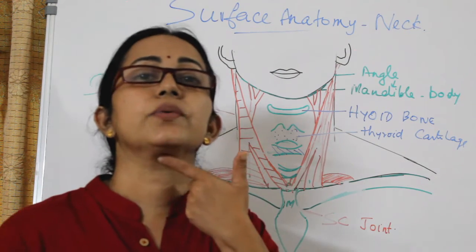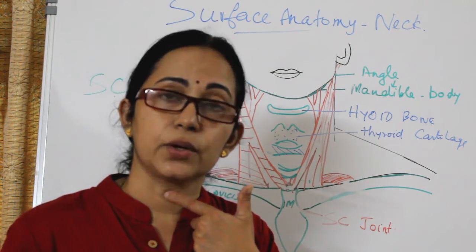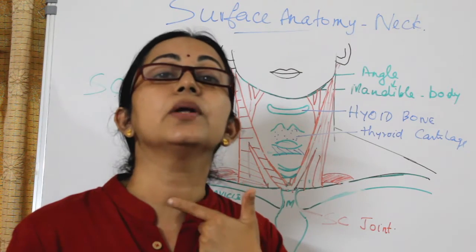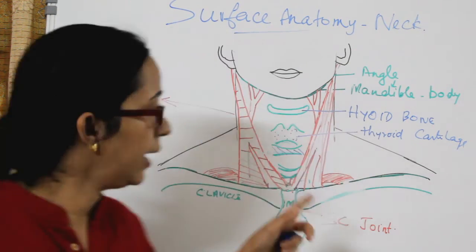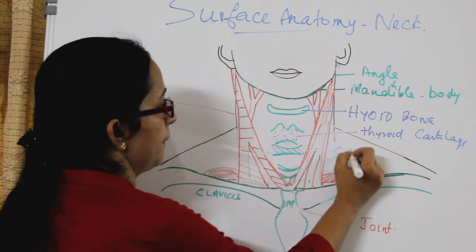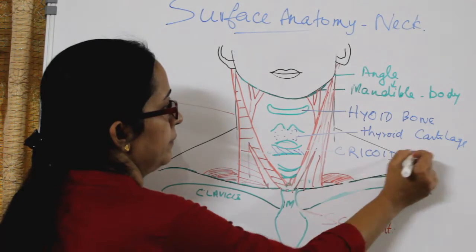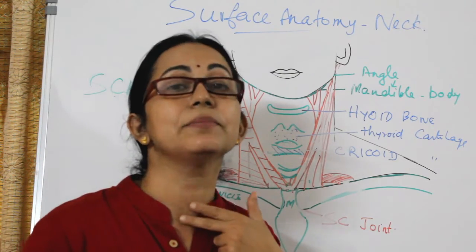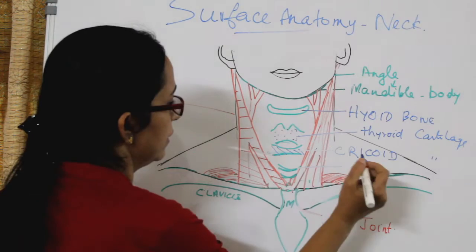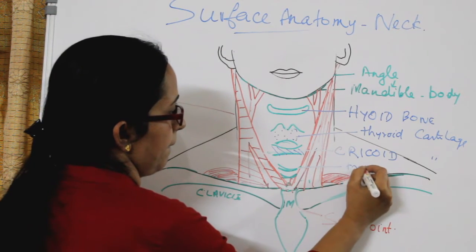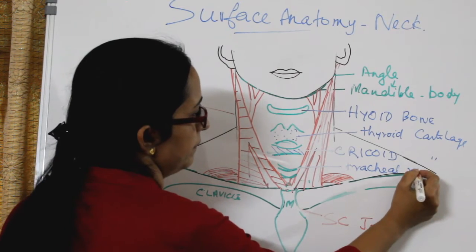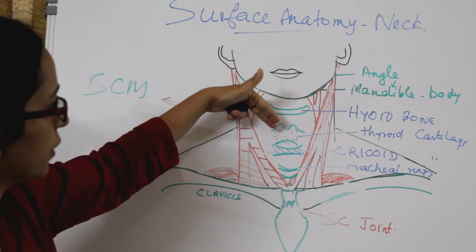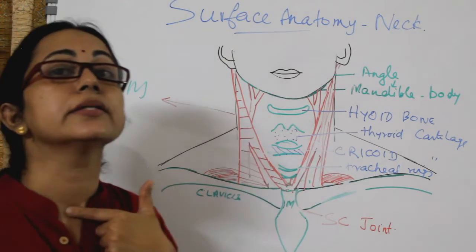In surface anatomy, from superior to inferior: first the hyoid bone, then the thyroid cartilage which moves with deglutition — movement of the larynx. Below that you can feel a change in consistency, a complete ring, and that is the cricoid cartilage. Below the cricoid cartilage come the tracheal rings, which can be palpated easily on a slim neck — tracheal rings one and two. So: hyoid bone, thyroid cartilage, then cricoid, then tracheal rings.